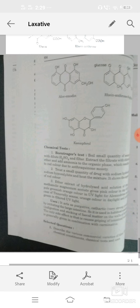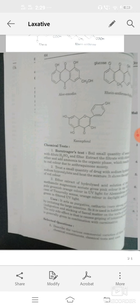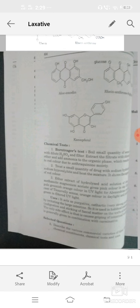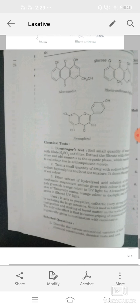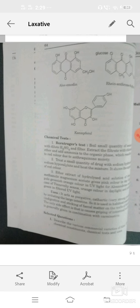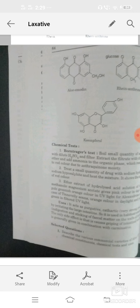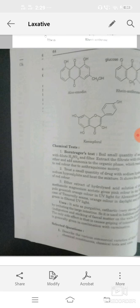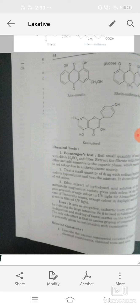Chemical test: first is Borntrager test. Boil some quantity of senna leaves with dilute H2SO4 or sulfuric acid and then filter. Then extract this filtrate with chloroform or ether or add ammonia which shows pink to red color. Treat a small quantity of drug with sodium hydroxide or sodium hyposulfite, then it shows red color. Third one: ether extract of hydrolyzed acid solution of drug with methanolic magnesium acetate which gives pink color in daylight and pale grayish orange color in UV light for Alexandria senna or in case of Tinnevelly senna orange color in daylight or yellowish in UV light.